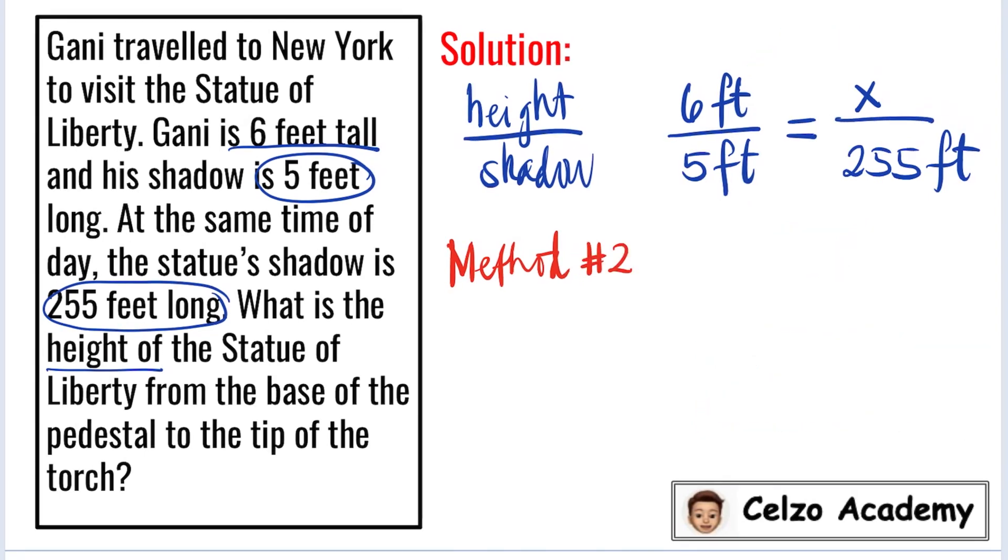And now for our method number 2. Solving this ratio and proportion, we can simply cross-multiply, which means we need to multiply 5 times X, which is 5X, and we also need to multiply 6 times 255. Now, instead of multiplying 6 and 255,